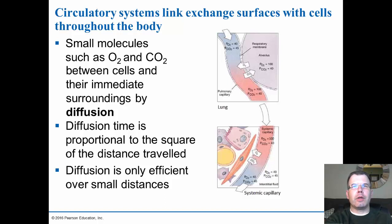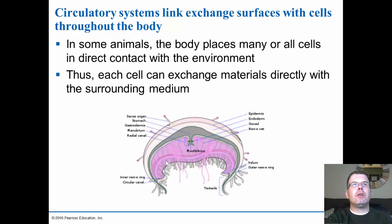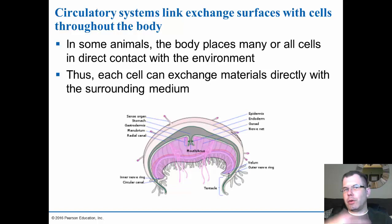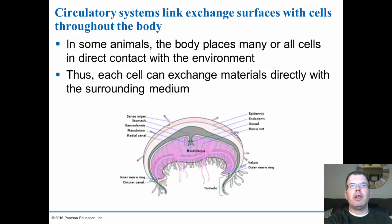In early invertebrates and early animals, every cell is pretty much very close to the outside layer, so you will not see circulatory systems in very simple animals like sponges and jellyfish. Their cells are all very close to either the inner cavity or the outer cavity, so they can do simple diffusion. There's not a lot of layers to go through, allowing these animals to exchange directly with the surrounding medium. They don't need a lot of exchange units because they're very simplistic.